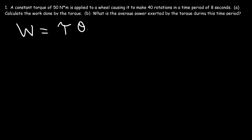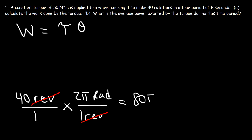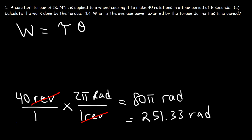We need the angular displacement to be in radians — right now we have rotations. One rotation, which is equivalent to one revolution, equals 2π radians. So all we have to do is multiply 40 by 2π, giving us 80π radians, which as a decimal is 251.33 radians. That is the angular displacement in radians.